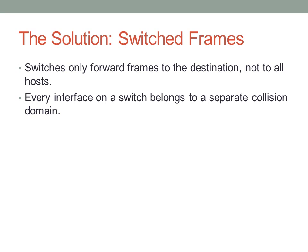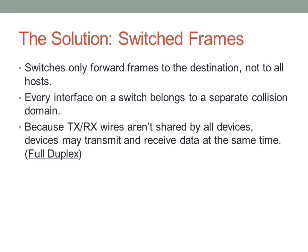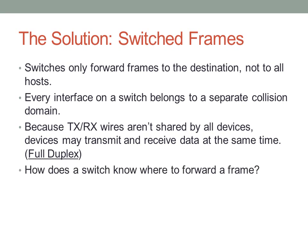Every interface on a switch belongs to a separate collision domain, so we don't have to worry about shared wires or shared bandwidth, because all devices are on separate collision domains. Because the transmit and receive wires aren't interconnected like we saw with hubs, devices can actually listen and talk at the same time. We call this full duplex, which was described in the previous module.